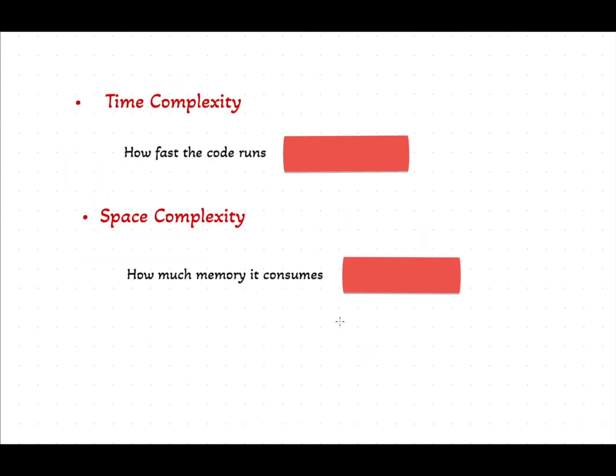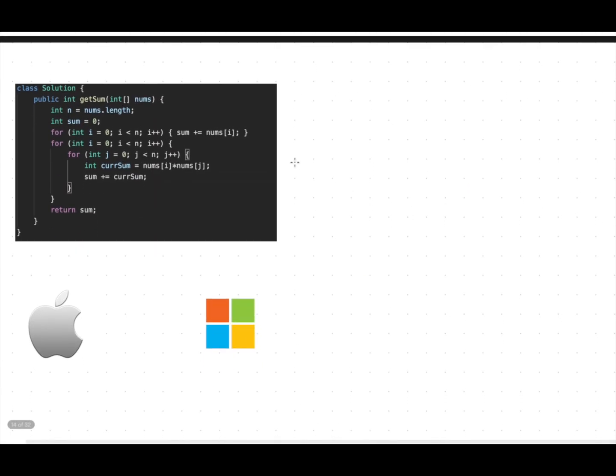As we discussed earlier, time complexity refers to how fast a code runs while space complexity refers to how much memory it consumes. We'll see what's behind this later. But how do we actually measure this?